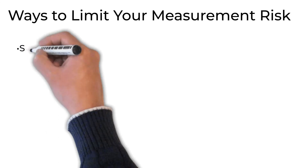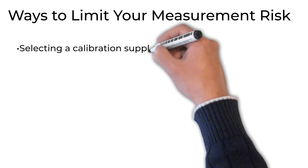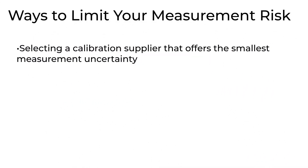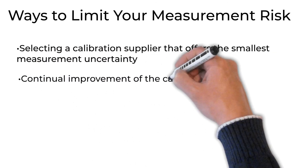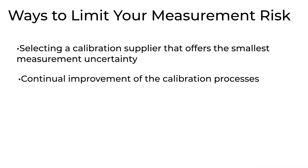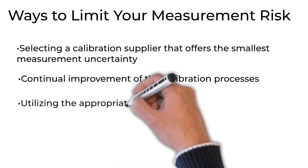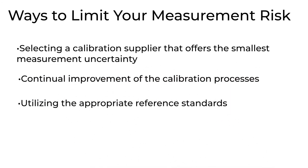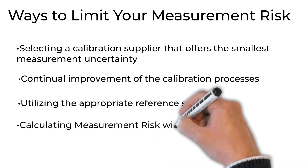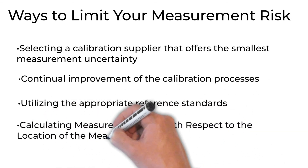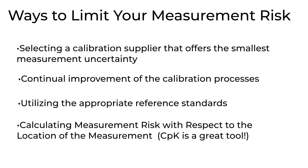Ways to limit your measurement risk: selecting a calibration supplier that offers the smallest measurement uncertainty; continual improvement of the calibration process; utilizing the appropriate reference standards; calculating measurement risk with respect to the location of the measurement. CPK is a great tool for this assessment.